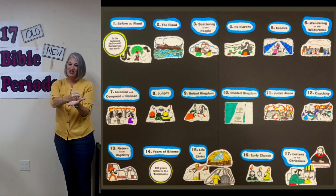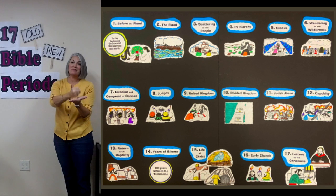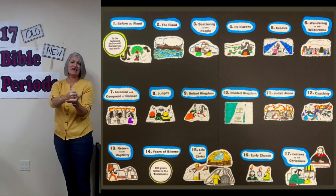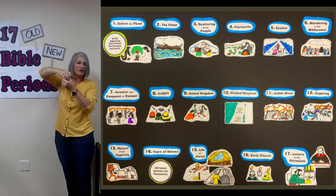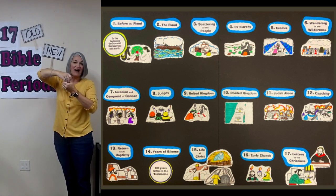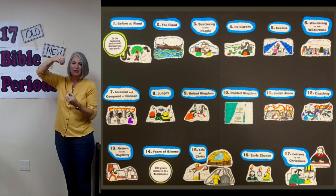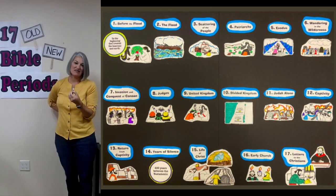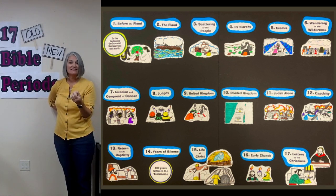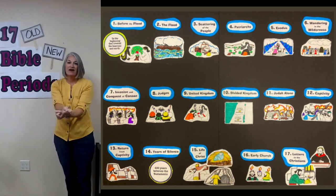Judges — we put our gavel down. Now that's not exactly the kind of judges they were in the Old Testament, but it's a good memory builder for us. So here's our judges sign. United Kingdom — we have the North and the South and they're united; you've got to link them together. Divided Kingdom — pull them apart. Judah alone — Israel is taken into captivity and Judah is down here by itself. Captivity — you've got to put your handcuffs on.